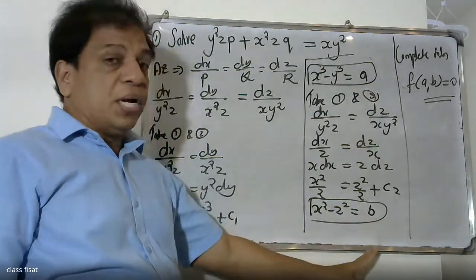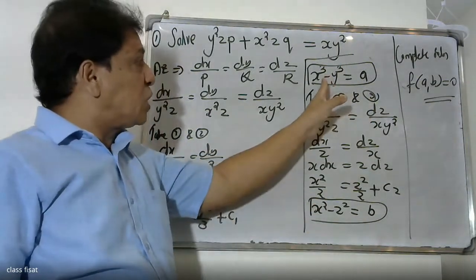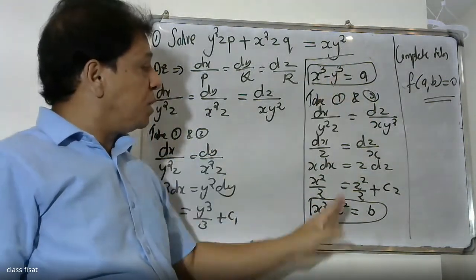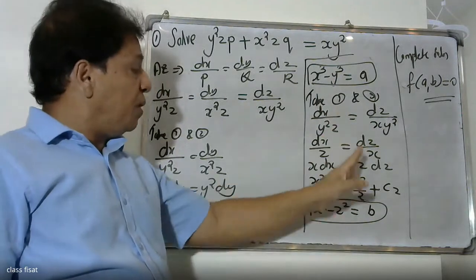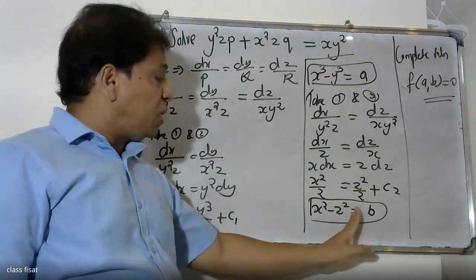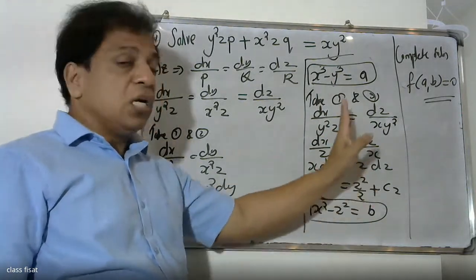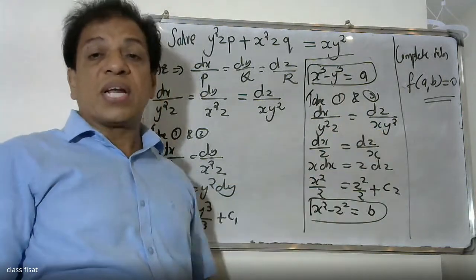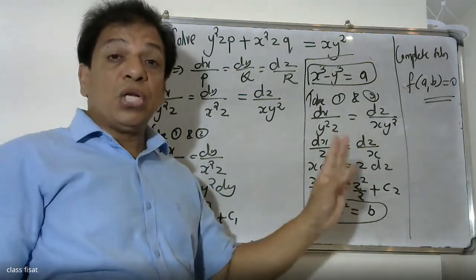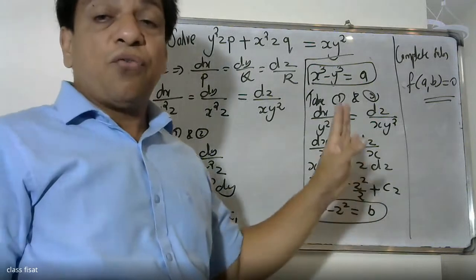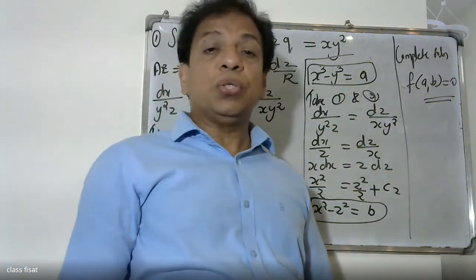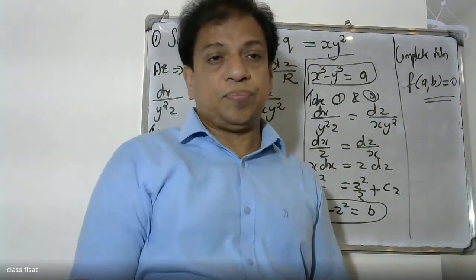So we have V equal to x-cubed minus y-cubed, and V equal to x-squared minus z-squared. Therefore, we write the complete solution as F(a, b) is equal to zero.